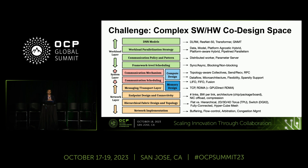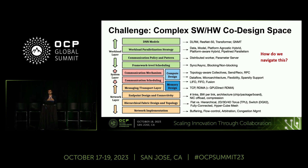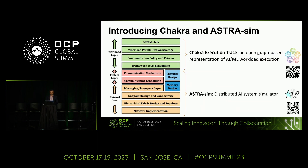The pink part is the system layer, capturing the specific communication algorithm and scheduling strategy — decisions made by collective libraries like NCCL, RCCL, or oneCCL. The light blue and dark blue parts are the compute and memory subsystems, and the orange part is the network fabric with its own software and hardware stack. There's a big co-dependence between all of these, and that's what ultimately determines the end performance of your model.